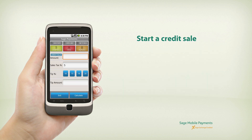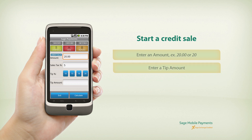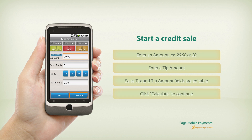Now let's start your credit sale. Enter an amount — in this example, $20. Next, you can select one of our predefined tip percentages, in this example 10%. The Sales Tax and tip amount fields are editable, so you can enter any amount you need. Then click Calculate to continue.